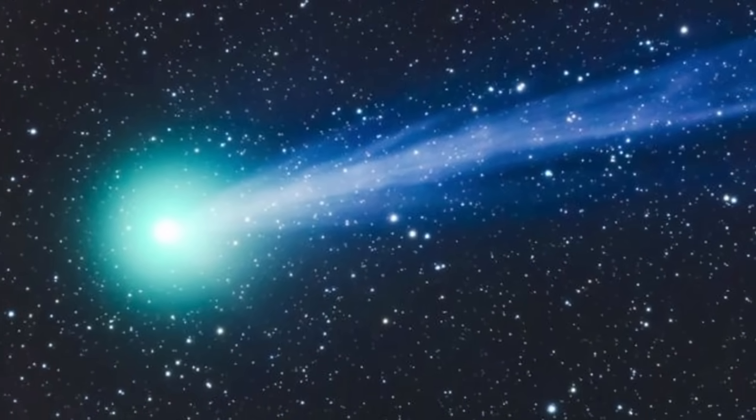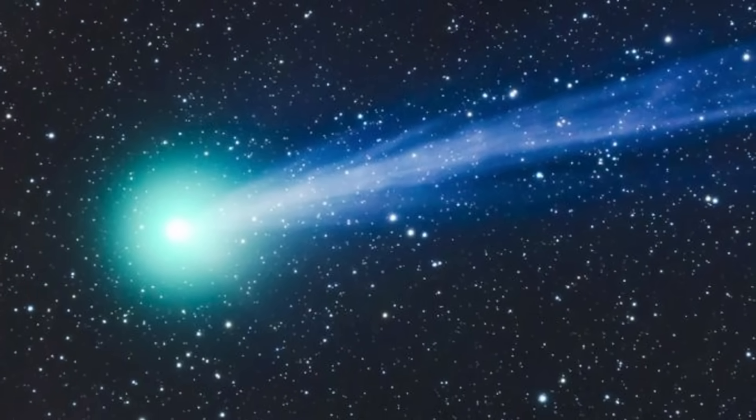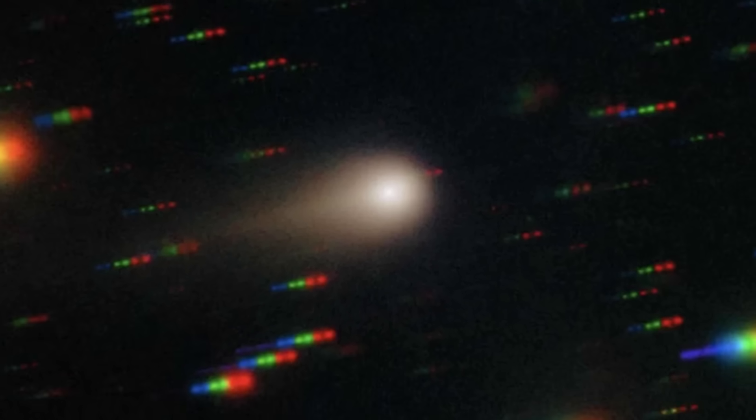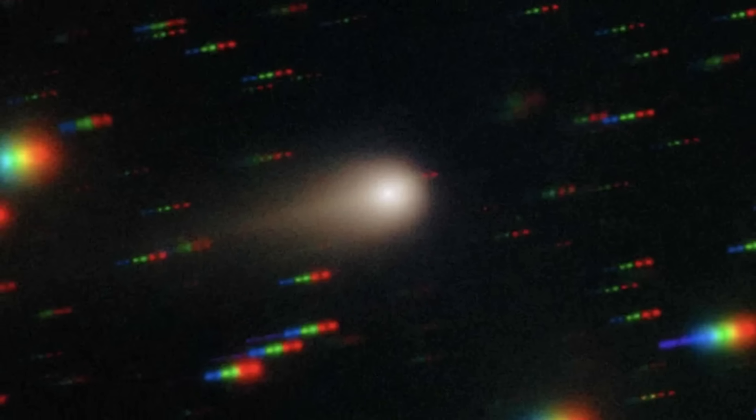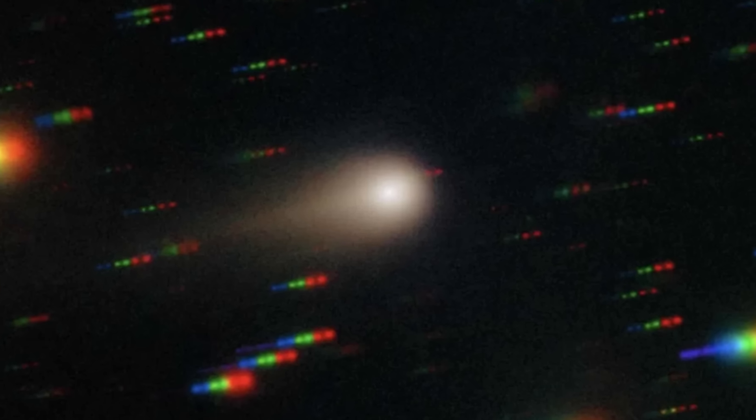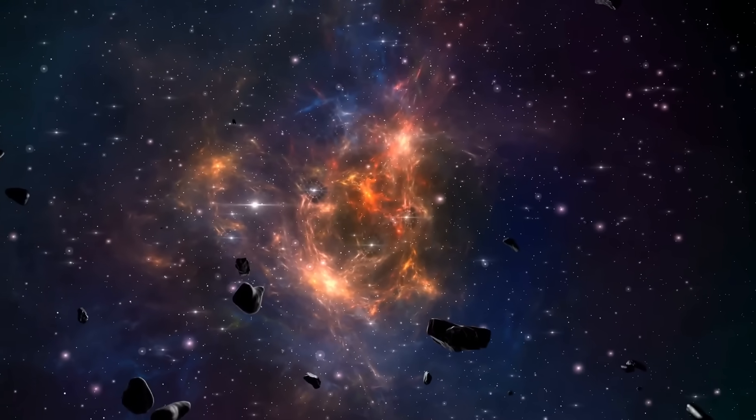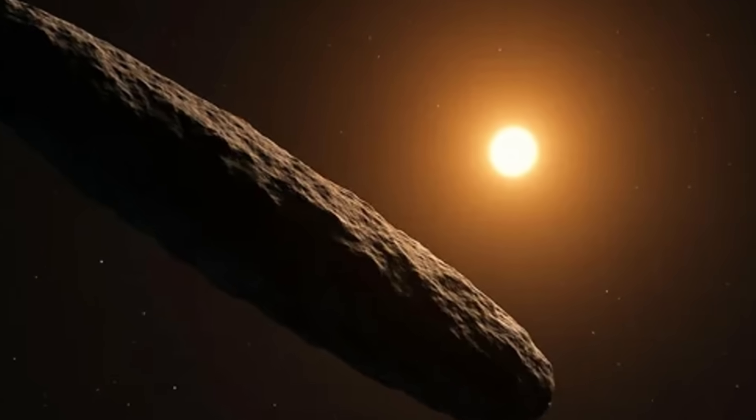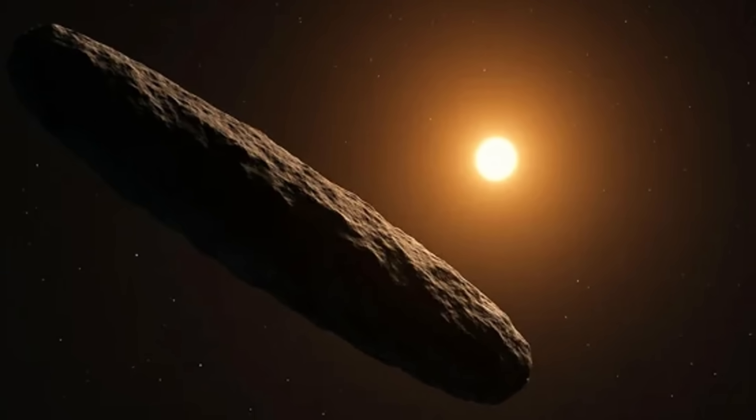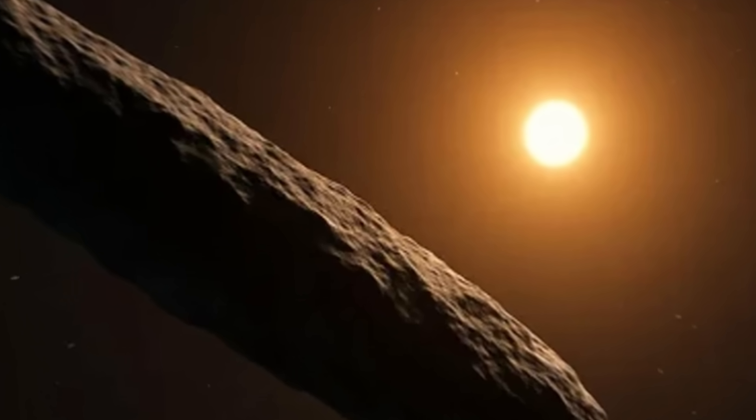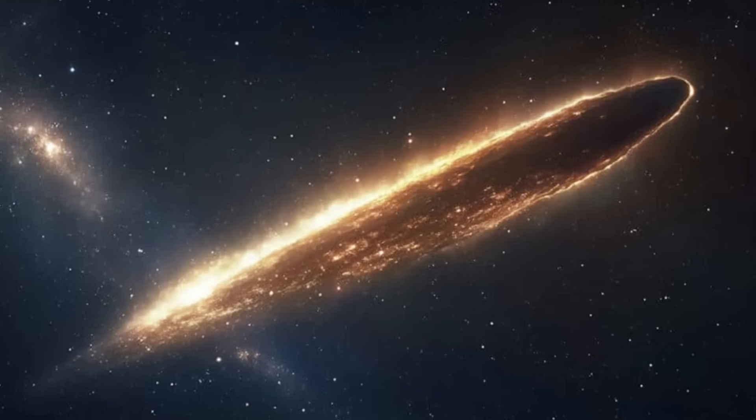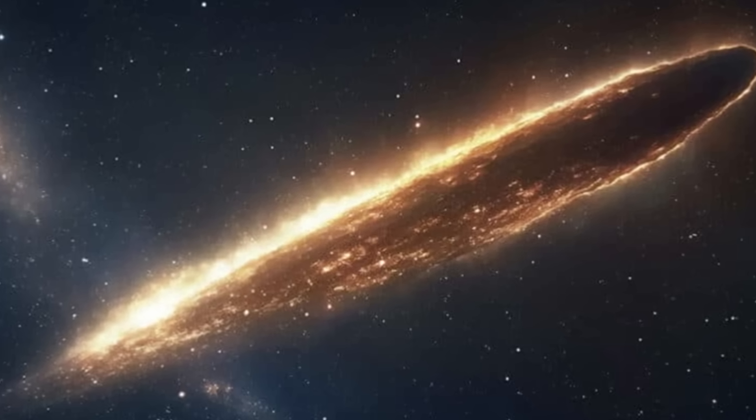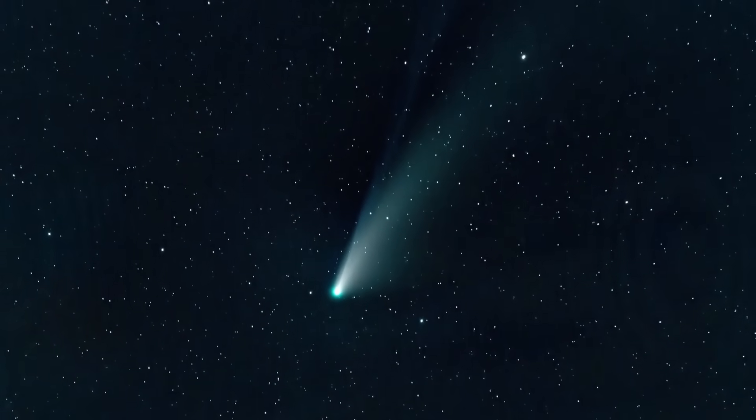3i Atlas is already on its inbound journey, and if the data holds true, its silent companions are with it, gliding invisibly across the void. Humanity now stands at a threshold unlike any we have faced before. We can avert our eyes, dismiss the anomalies as errors, and cling to the comforting belief that the cosmos is empty and indifferent. One way or another, the passage of Comet 3i Atlas represents a turning point. Whether its companions are natural debris or artificial constructs, whether this is merely an exotic interstellar comet, or something far greater, it challenges us to broaden our vision and prepare ourselves for truth that may defy our current understanding.